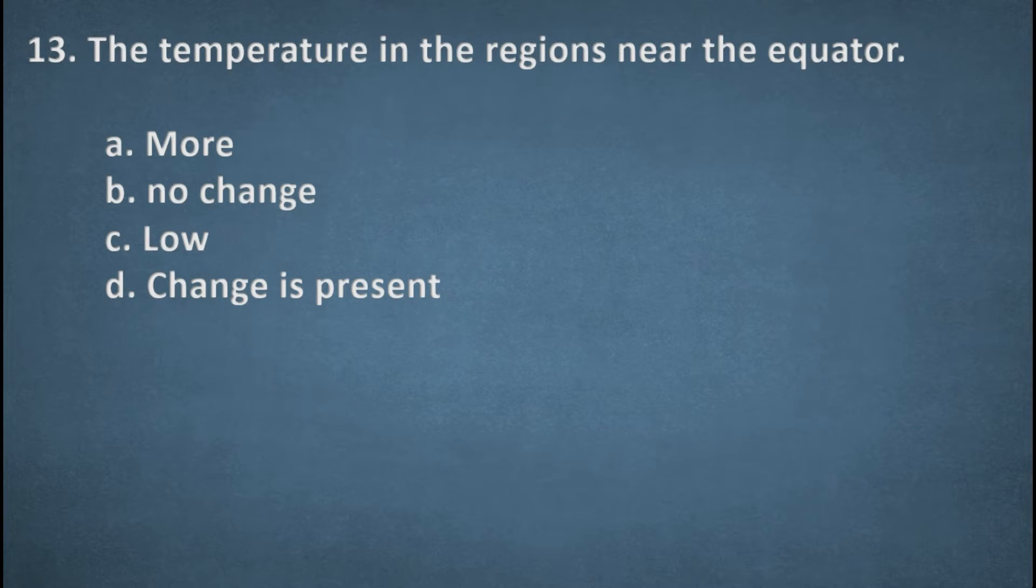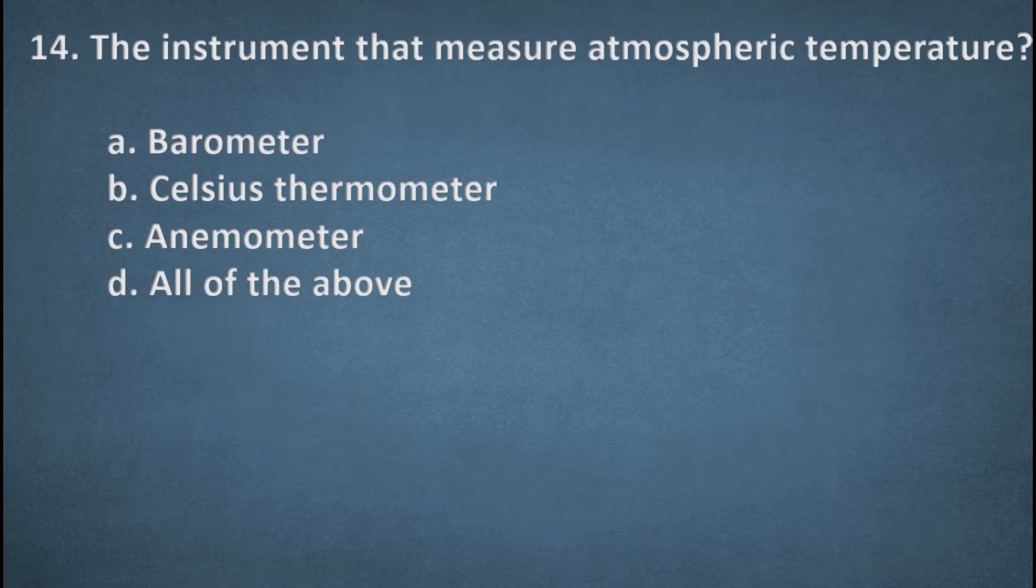Next one. The temperature in these regions near the equator. Options: More, No change, Low, Change in present. The right option, More, Option A. Next one. The instrument that measures atmospheric temperature. Options: Barometer, Celsius thermometer, Anemometer, All of the above. The right option, C, Anemometer.